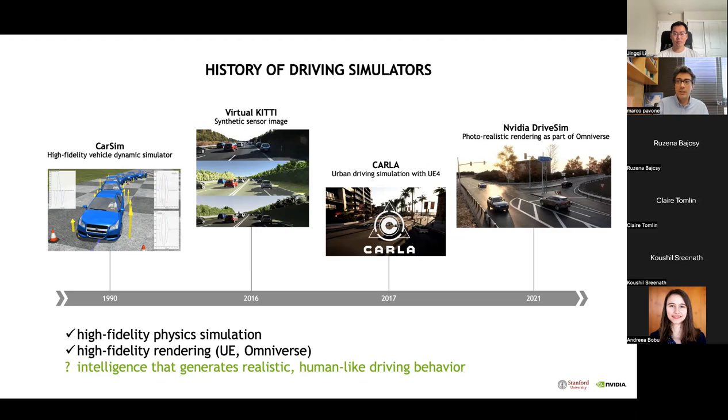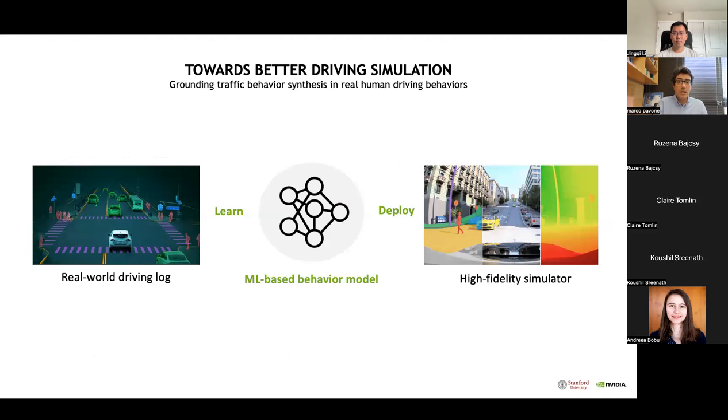The key missing piece is that the behaviors of simulated agents in most simulators are still controlled by pre-programmed logic or rather simple models. They don't really capture the nuanced and diverse behavior that a real human would enact. To truly create realistic driving simulation, we need to build intelligent agents that generate realistic human-like behaviors.